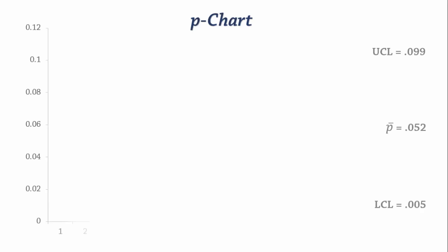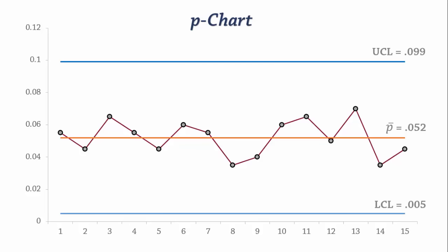And here is the p-chart. Everything looks OK. No points beyond the control limits, and there is no unwanted pattern. We can say confidently that the process is in statistical control.